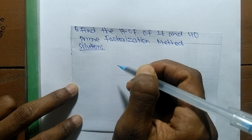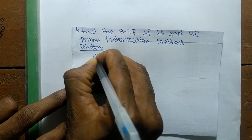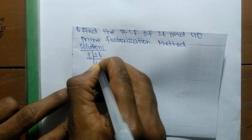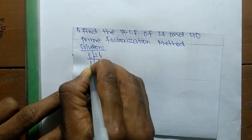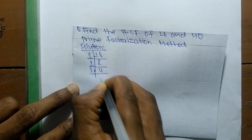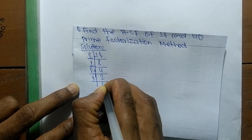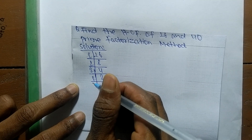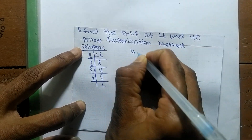First we find out the prime factors of 16. It is 2 times 8 means 16, 2 times 4 means 8, 2 times 2 means 4, and 2 times 1 means 2.